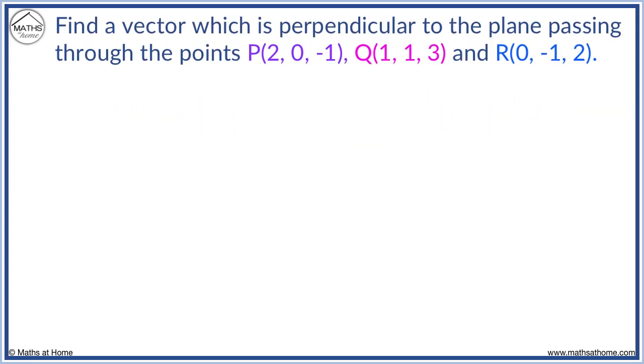For example, find a vector perpendicular to the plane passing through points P(2, 0, -1), Q(1, 1, 3), and R(0, -1, 2).